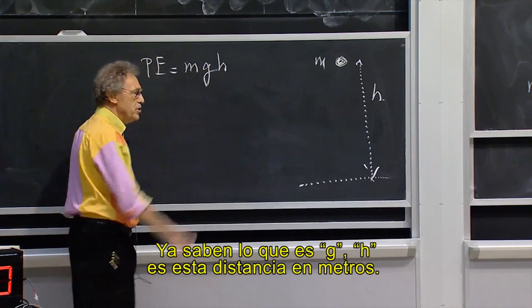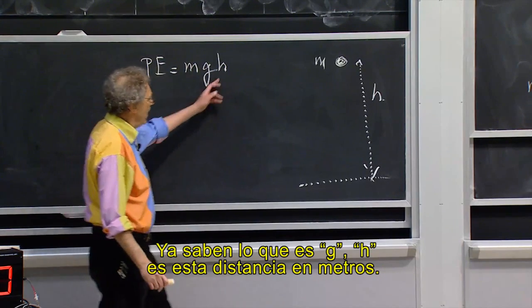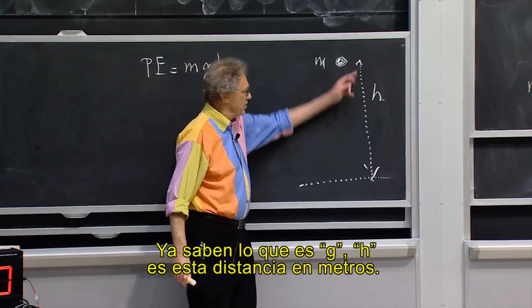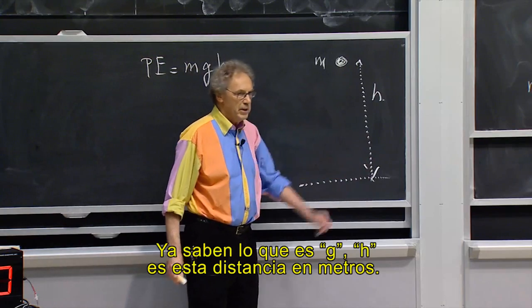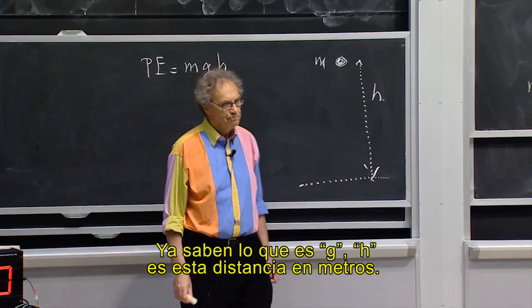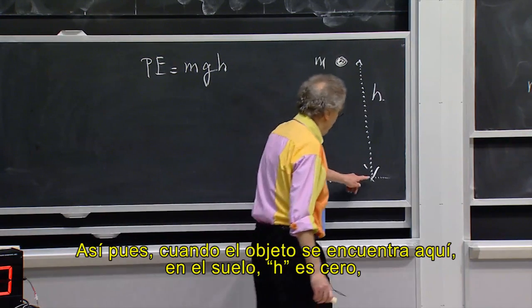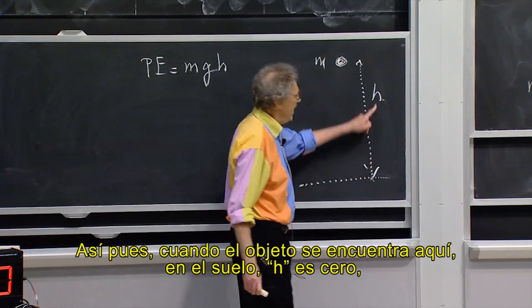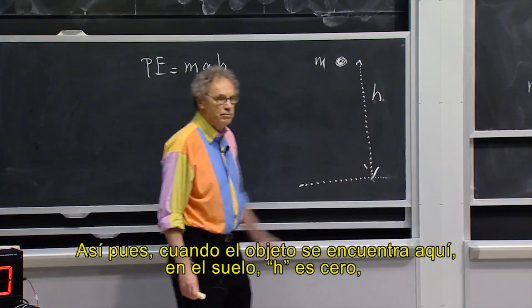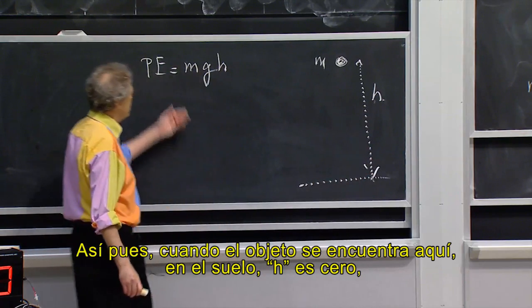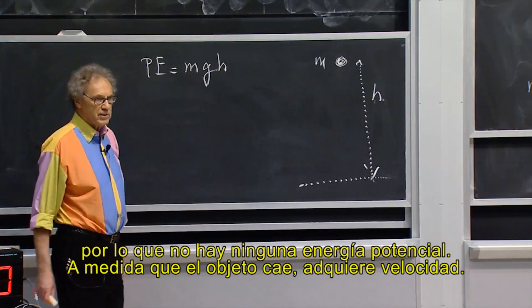You already know what g is. h is this distance in meters. So when the object is here on the floor, h is zero, so there is no potential energy. And that potential energy is mgh.